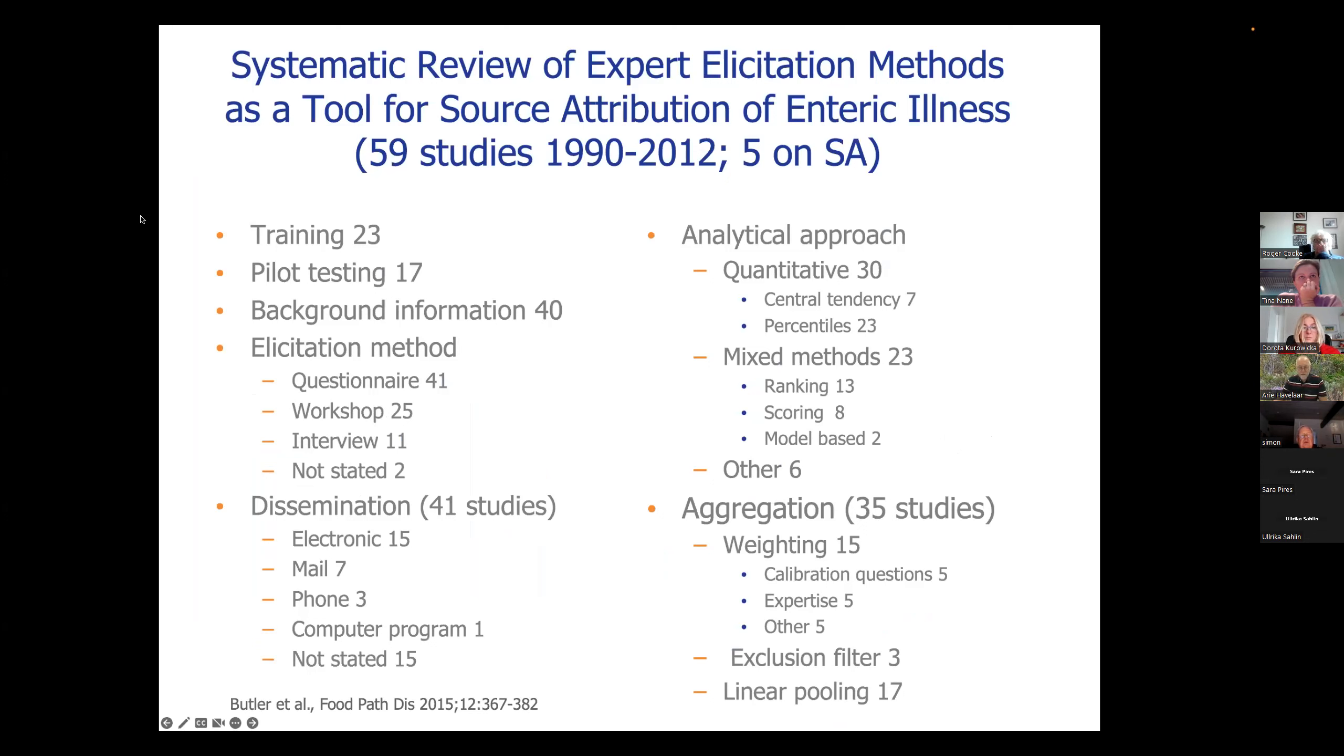But expert elicitation is the only available method for major pathway attribution and all relevant hazards. So that's what people have been using in the early, I think in 2015, a Canadian group published a systematic review of expert elicitation methods to inform their choice of a method for source attribution of enteric illness. So they didn't only review source attribution studies, but more generally, expert elicitation studies. They picked out 59. I think there were more. When I look at it, I think there's quite a few missing. But anyway, so they were looking at all kinds of characteristics. So out of those 59 studies, only 23 did training of the experts. Pilot testing was done in 17. Background information, a large year, but still far from complete. Different elicitation methods with questionnaires dominating. Dissemination, mainly by electronic means, even though the studies were looking back 1990 to 2012. Also mail, phone, or just not stated in the study.